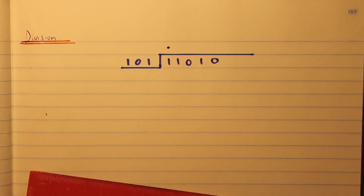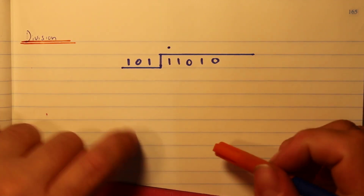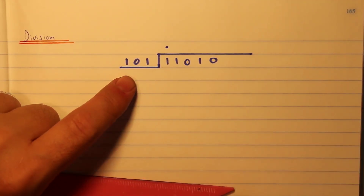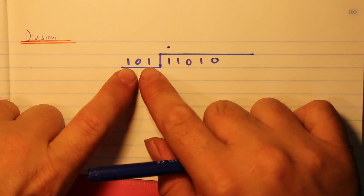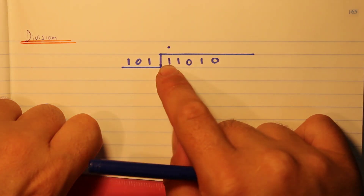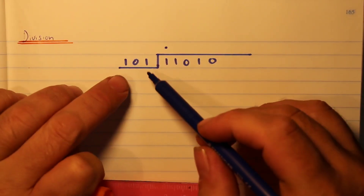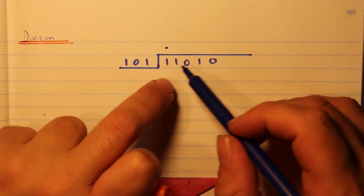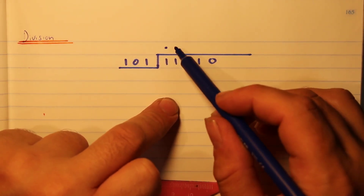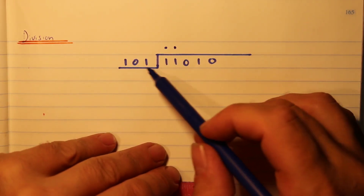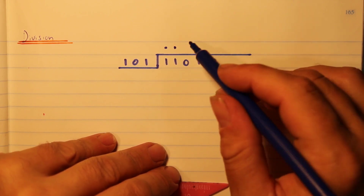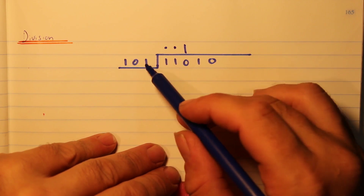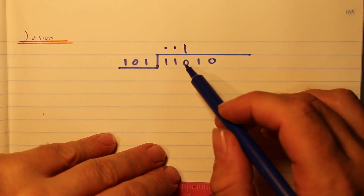We're looking at another binary division problem, and here we have a much simpler example. We have a three-digit number and we check: does it go into the first digit? No. Does it go into these two digits? No. Does it go into these three digits? Yes, it does — because the divisor is five and 110 is six, so it goes in.